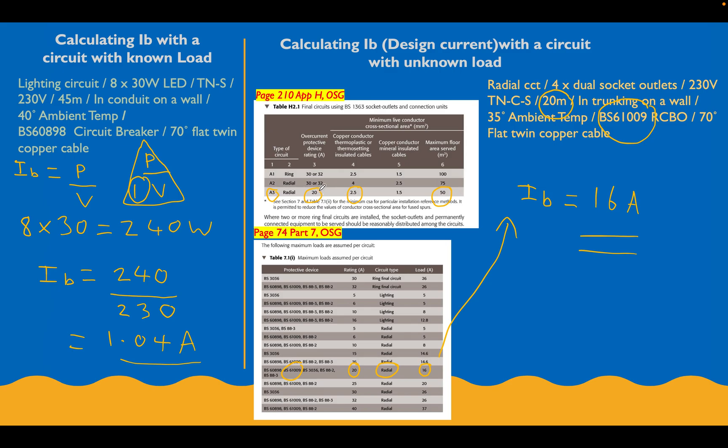We're still going to take this value and put it through the whole process - we're going to add correction factors to it and see if it'll still work with a 2.5mm cable on a 20 amp protected device. That's both sides of this done for our design current, so let's move on to step two.